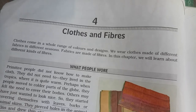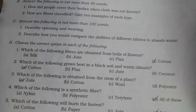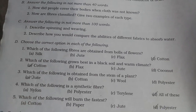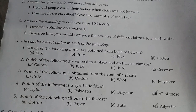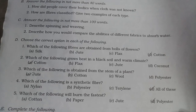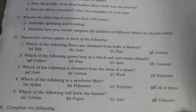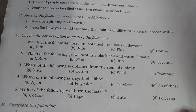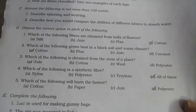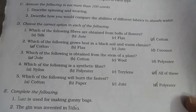Chapter 4: Cloth and Fibre. Which of the following fibres are used to obtain fabric from flowers? Cotton. Which of the following grows best in black soil and warm climate? Cotton. Which of the following is obtained from the stem of a plant? Jute.